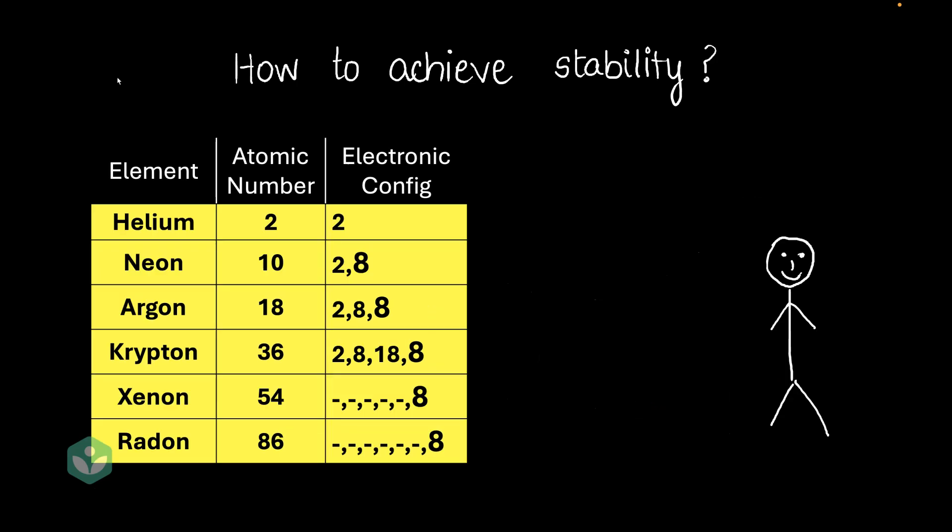So, to summarize, we can say that any atom that gets an electronic configuration like a noble gas is stable. That's it for this video. Thanks for watching.